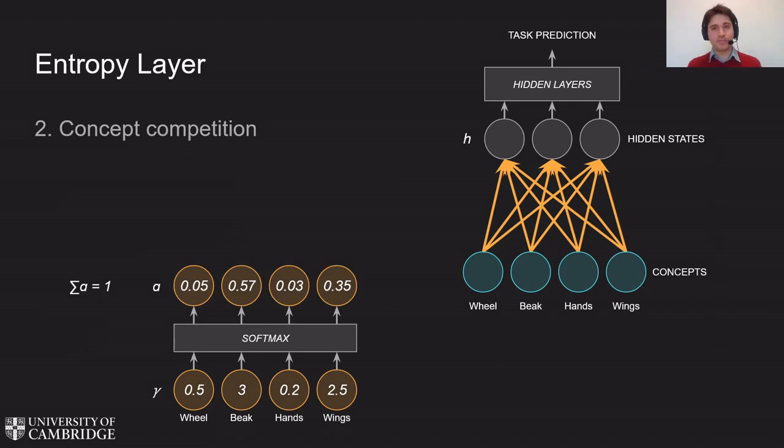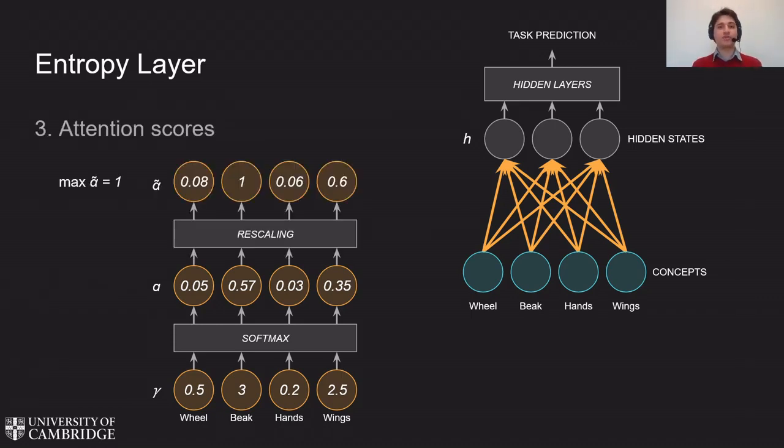The second step is to make concepts compete to survive. Only the most important concepts should remain. To this aim, the entropy layer applies a softmax over concept importance. The third step is to get the attention scores, obtained by normalizing the alpha scores to avoid numerical instability.